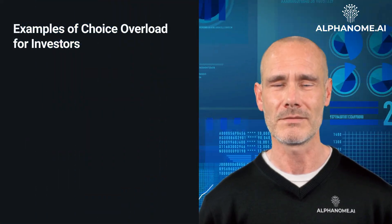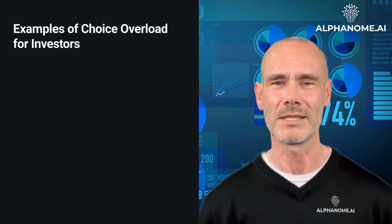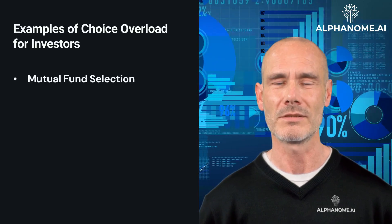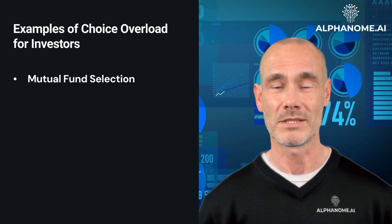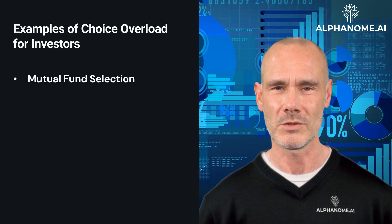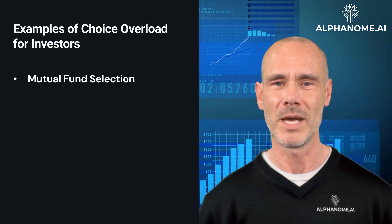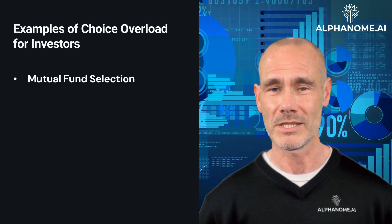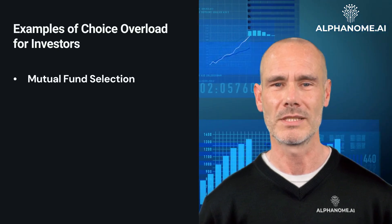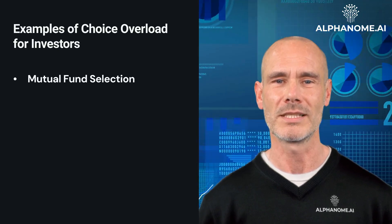Here are some common examples that illustrate how overchoice can negatively impact investment decisions. Mutual Fund Selection: With thousands of mutual funds and exchange-traded funds (ETFs) to choose from, investors can easily get overwhelmed trying to select the best options. Analysis paralysis may set in as they try to compare expenses, holdings, historical returns, rankings, and other factors across too many choices.